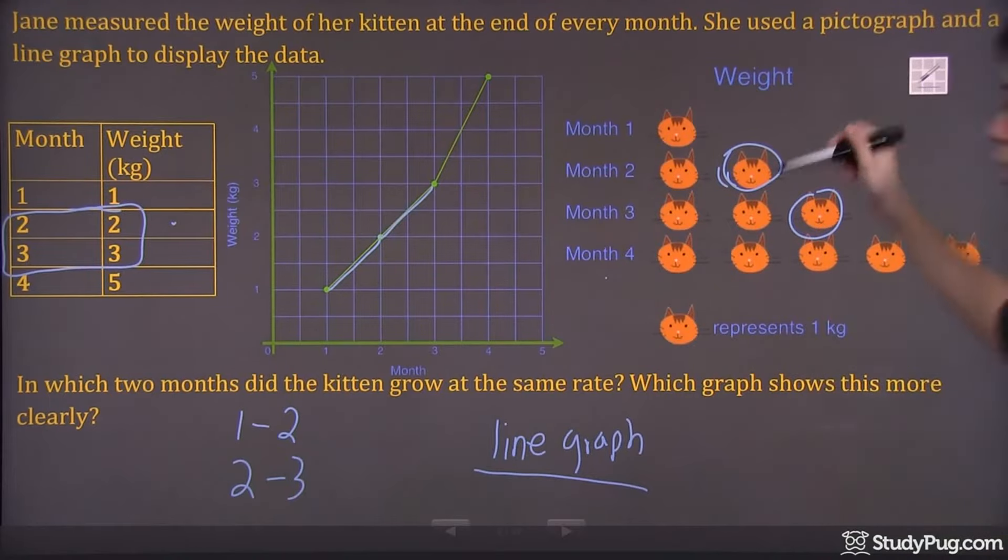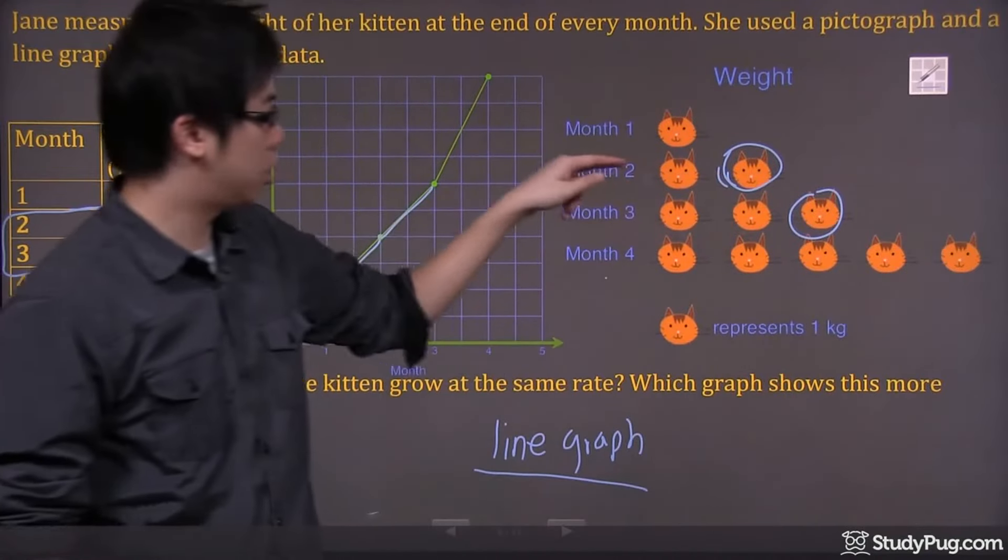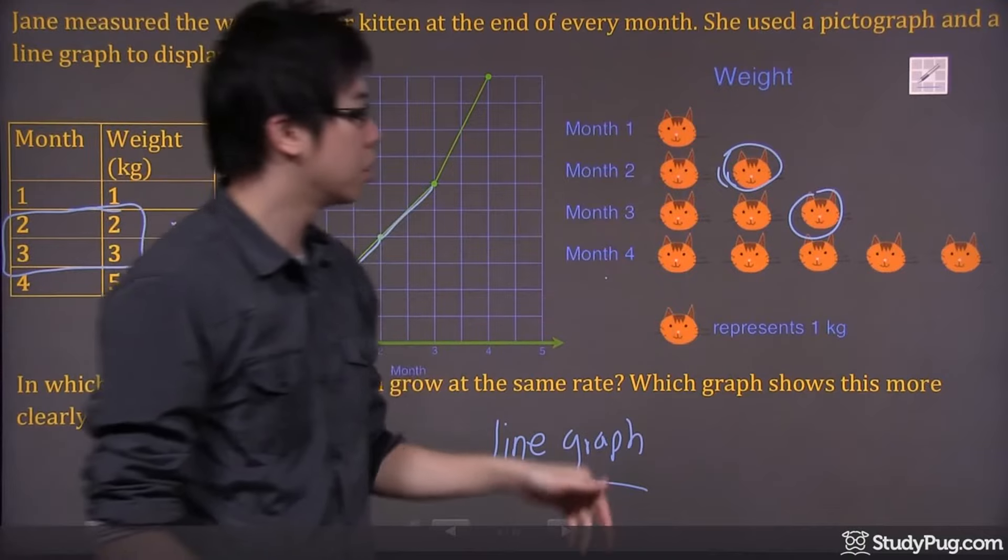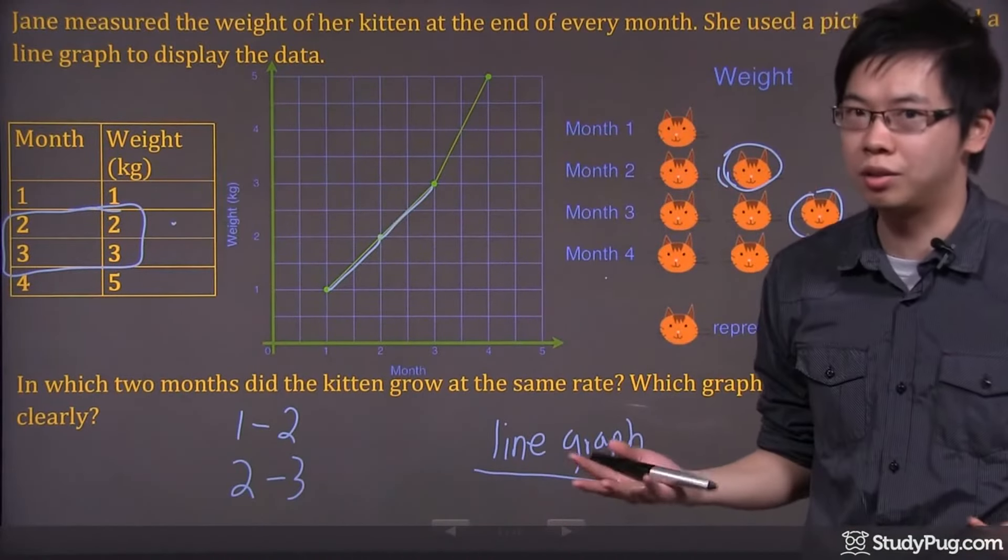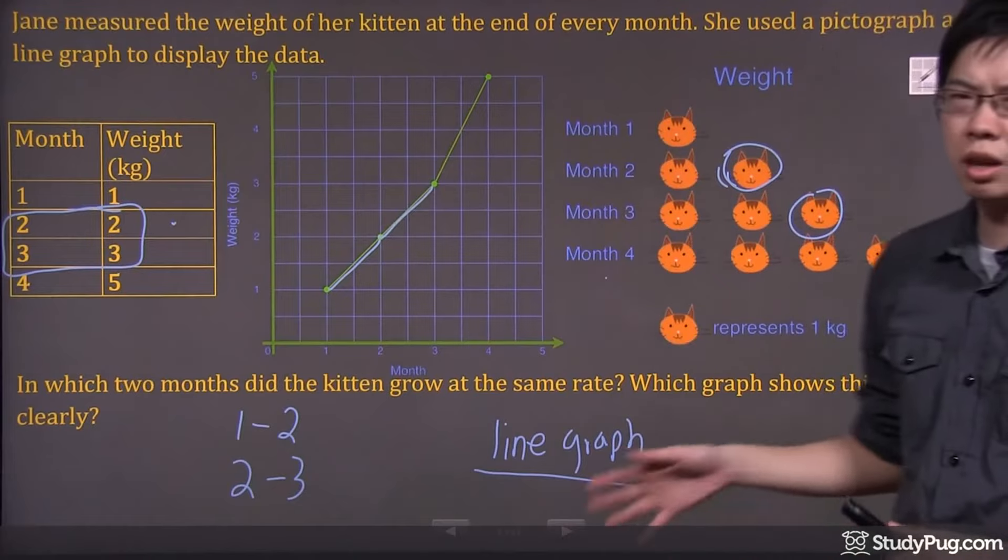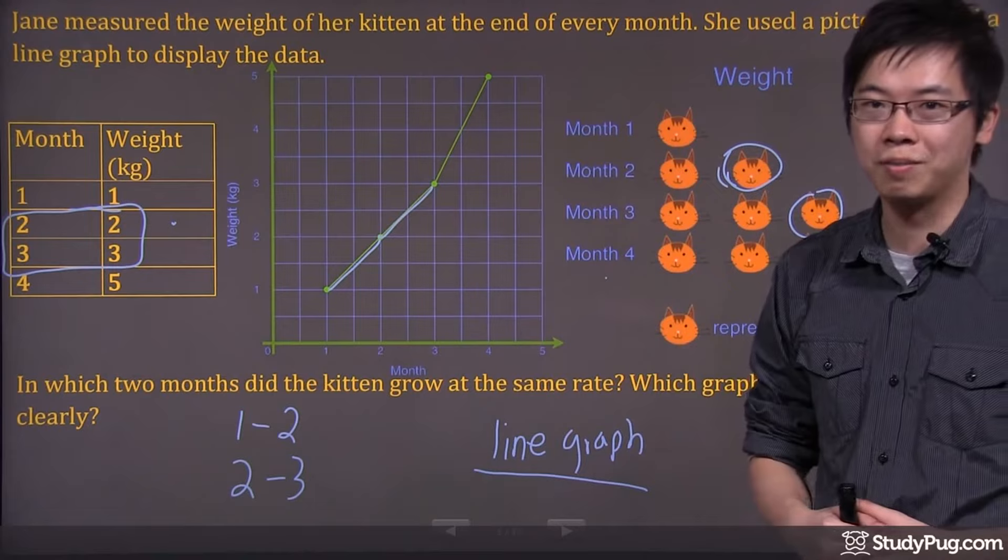Clearly, you can also see that the growth of the kitten's weight from here to here has the same growth rate. It really depends on your personality, your preference pretty much. I don't think there's a definite answer for this one, but for me I will go for the line graph for sure. Thanks for watching.